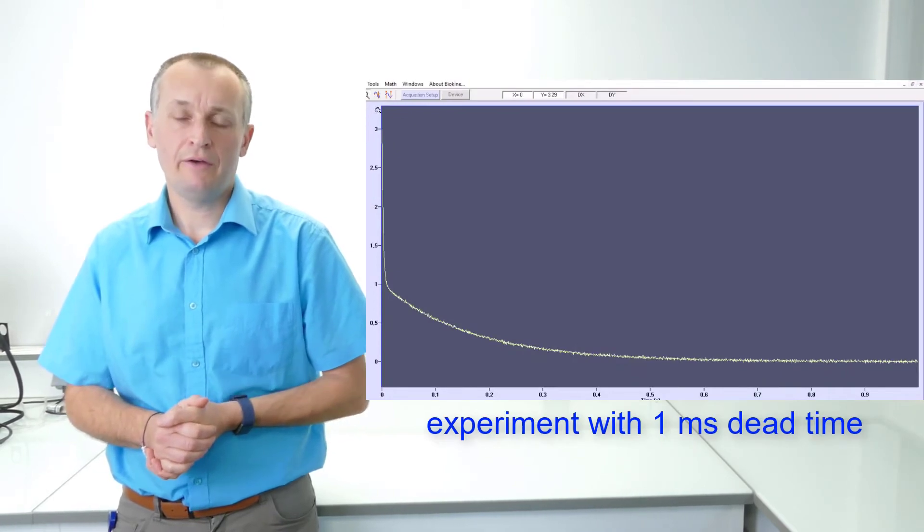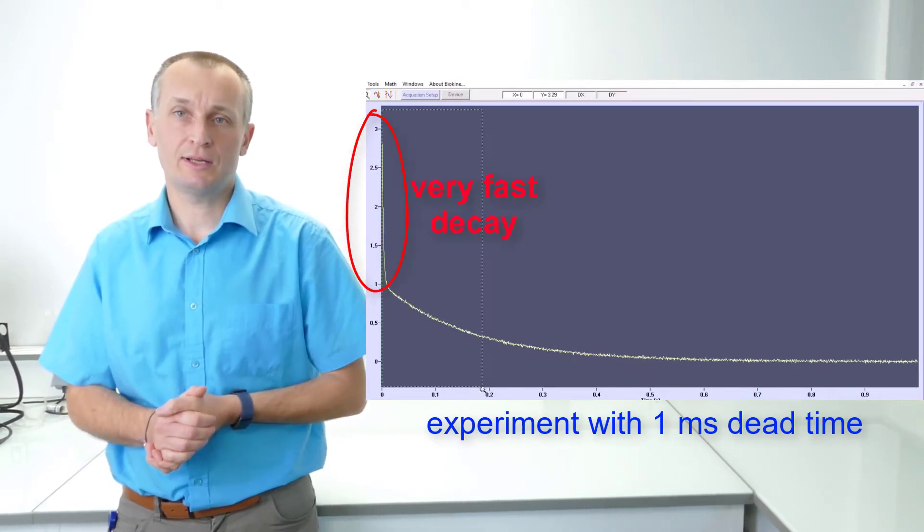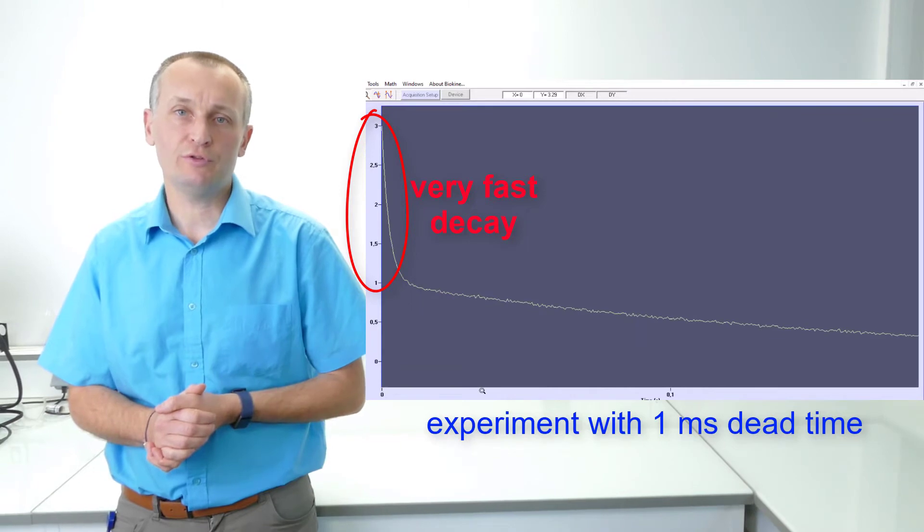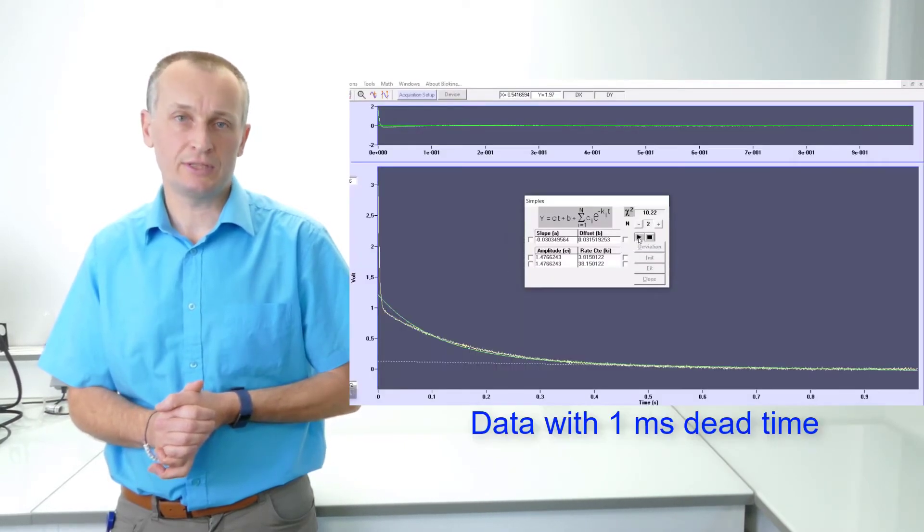However, if we do the same reaction with a 1 ms dead time, the trace looks completely different and shows an initial decay during the first 8 ms. The model is clearly not a single exponential anymore.